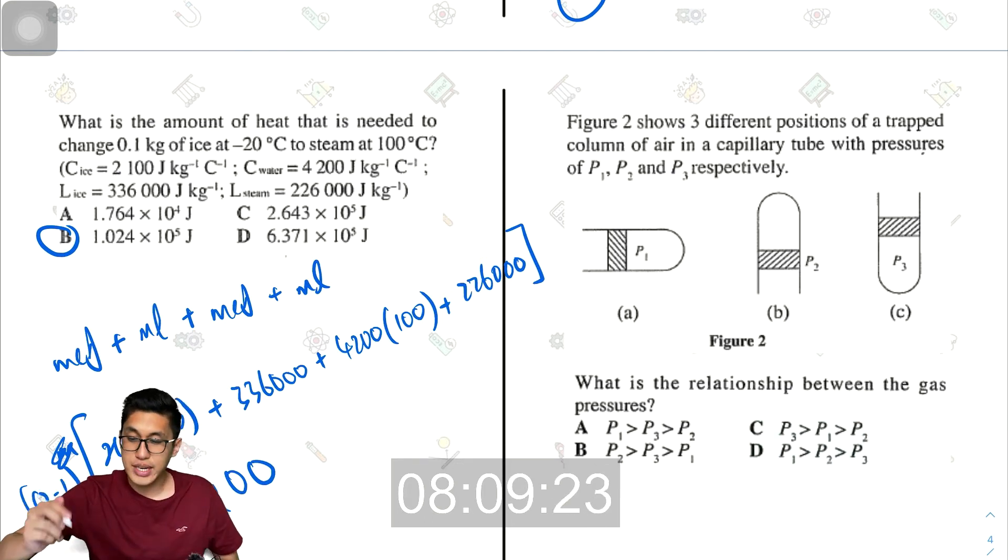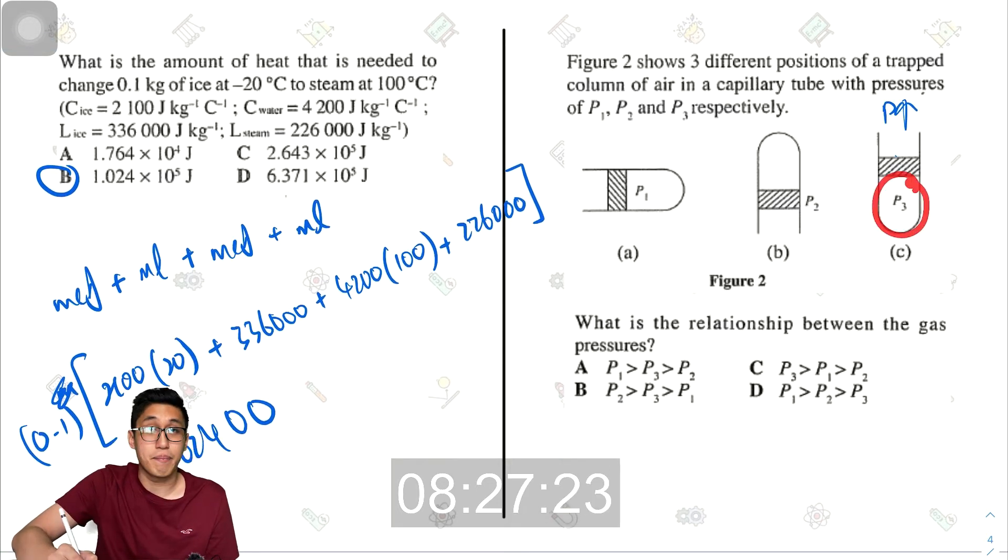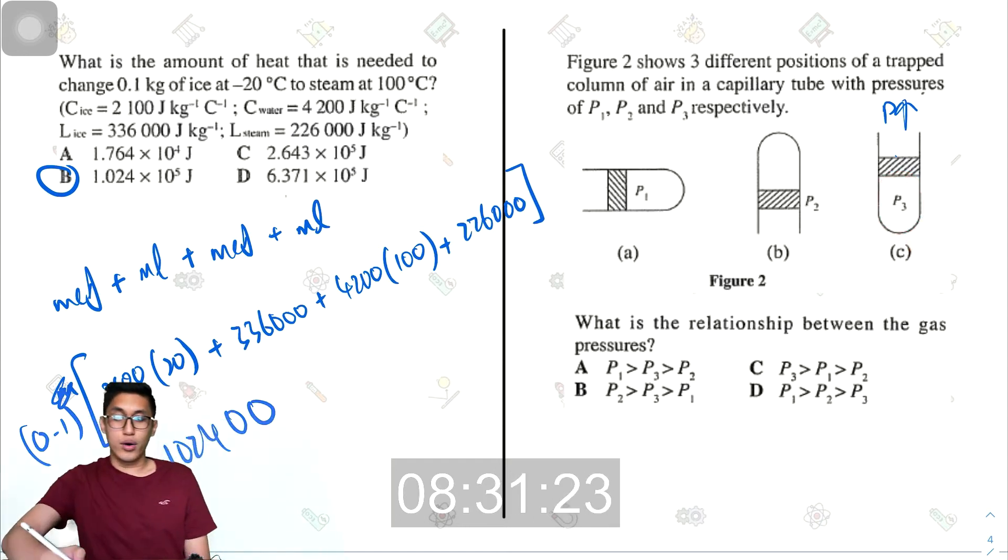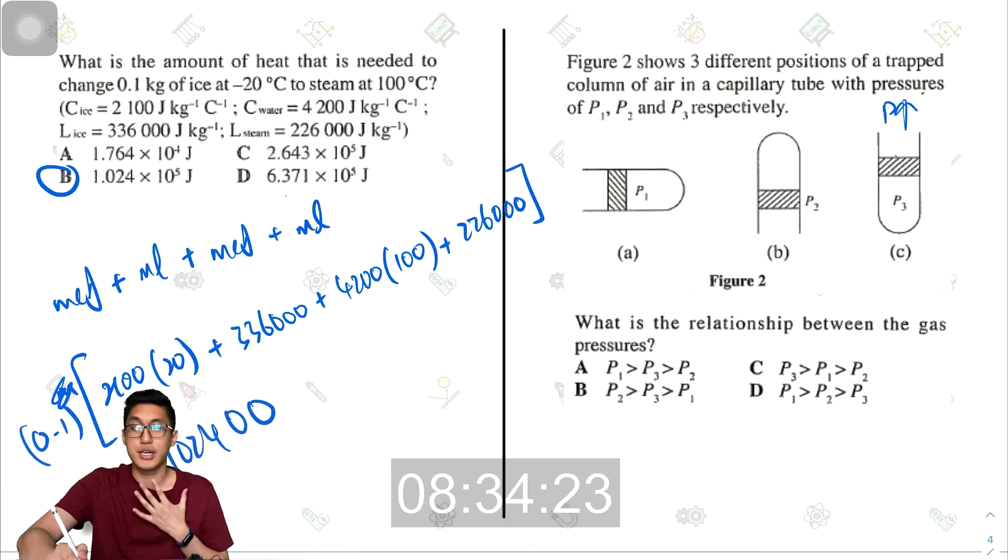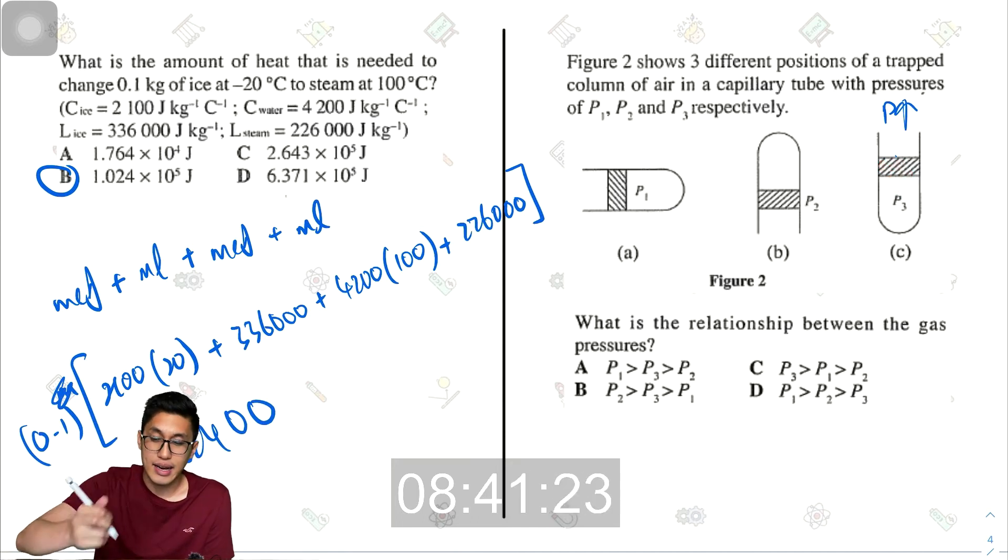Figure 2 shows three different positions of a trapped column of air in a capillary tube, with pressures of P1, P2, and P3 respectively. What is the relationship between the gas pressures? Now, I can see straight away that P3 will have the highest pressure because the gas at C will also experience, besides the atmospheric pressure, the pressure from this column of liquid here. And on the other hand, in condition B, this gas here will have the least amount of pressure because the column of liquid here is actually acting down, which will take away some of the pressure from P2. So, it will be P3, then P1, then P2. So this is C.